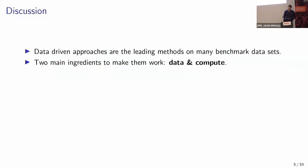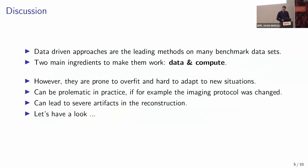Data-driven approaches are the leading methods on many benchmark datasets including the fastMRI dataset. However, they require two main ingredients: data and compute. A well-known problem is that neural networks are prone to overfitting to the training database and are hard to adapt to new situations — for example, changes in acquisition protocol, subsampling pattern, or image contrast.